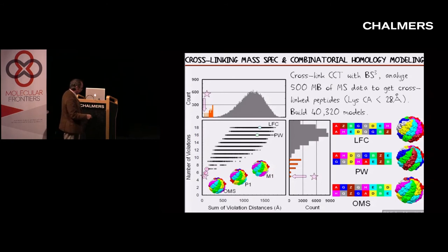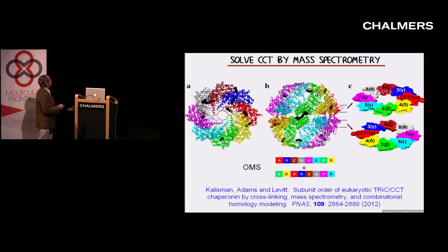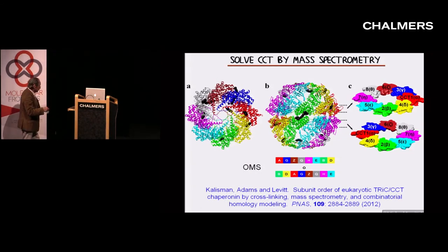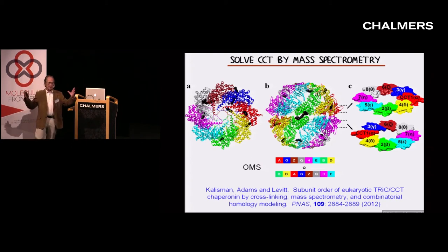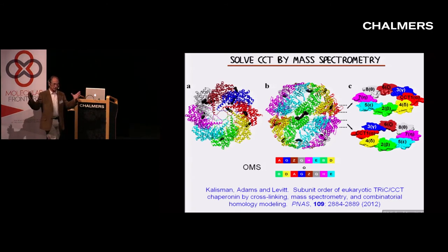We call this the OMS structure — the Optimal Mass Spectrometry structure. This just shows on the scale of the molecule where the cross links were. The cross linking agent is huge — about the same size as myoglobin across — but this is a big molecule so it works.